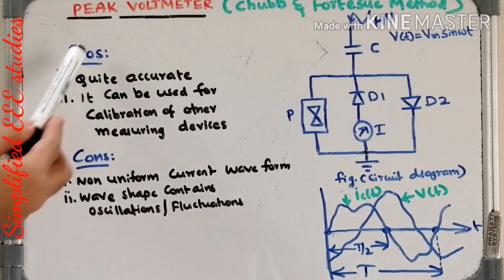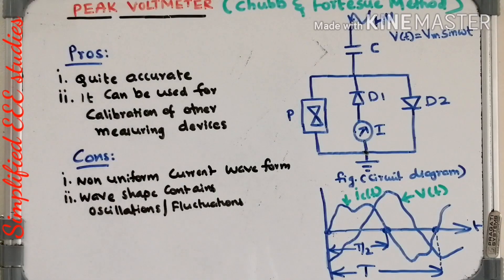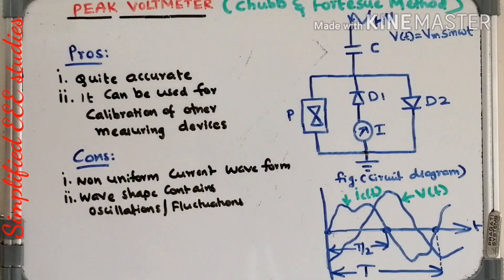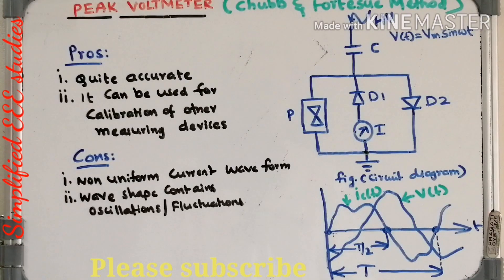Now let's discuss the pros and cons of the peak voltmeter. Looking at the pros: it is quite accurate and it can be used for calibration or extension of the range of other meters. Looking at the cons or drawbacks: the first drawback is a non-uniform current waveform. The ideal sinusoidal waveform is only theoretical — in practice the waveform is non-uniform with a lot of oscillations and fluctuations, which reduce the accuracy of the device.